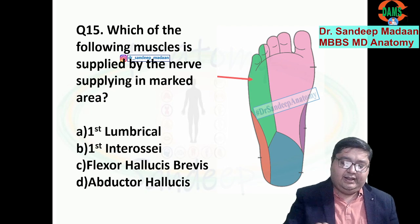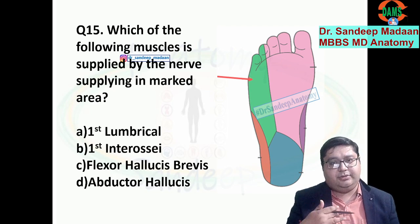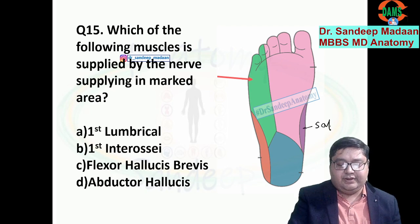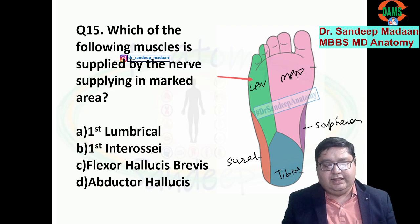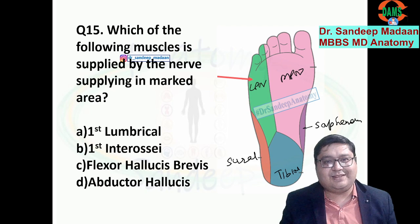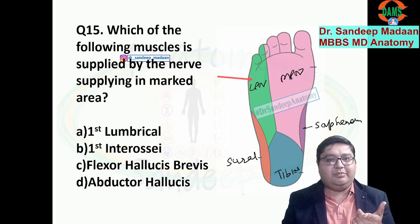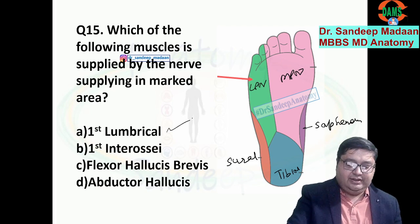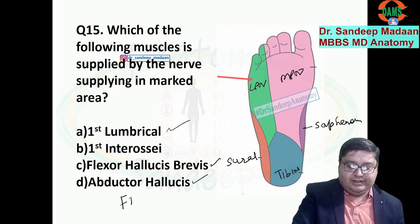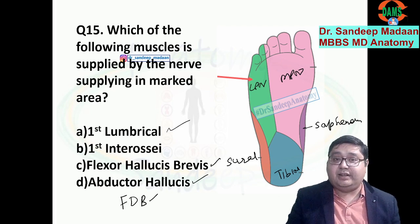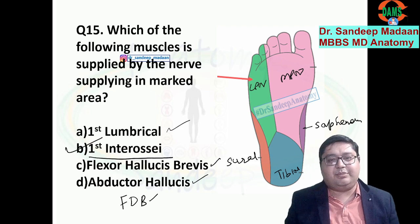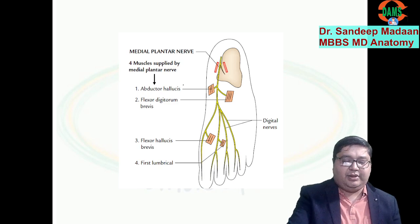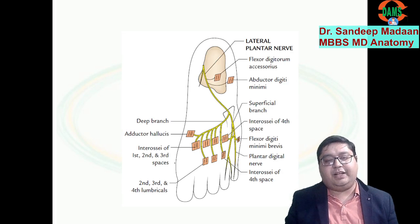Whenever we talk about the sole or plantar or dorsal aspect: medial is the saphenous nerve — fixed on both aspects — and lateral is the sural nerve, also fixed. But the plantar aspect is supplied by the tibial nerve via its branches, medial plantar nerve and lateral plantar nerve. Only four muscles are supplied by the medial plantar nerve: first lumbrical, flexor hallucis brevis, abductor hallucis, and flexor digitorum brevis. All other sole muscles — other lumbricals, interossei, etc. — are supplied by the lateral plantar nerve.